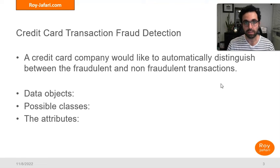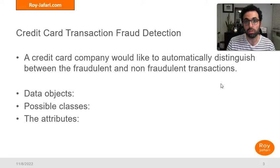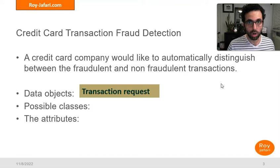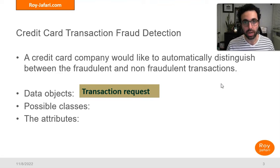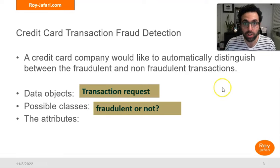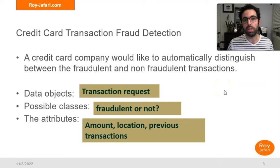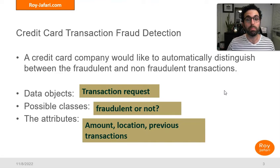Every time we have a classification task we have to be clear about three things. First, what is our data object — here each data object is a transaction. Second, what are the possible classes — fraudulent or not fraudulent. Third, what are the attributes — these could be the transaction amount, your location, your previous transactions, and the behavior of similar customers.